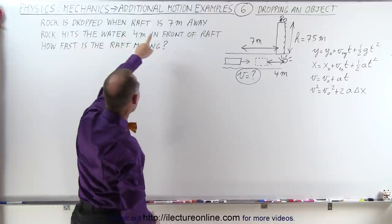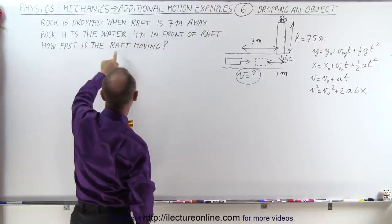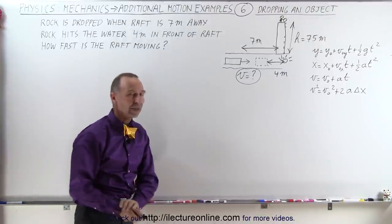So again, the rock is dropped when the raft is 7 meters away. The rock hits the water 4 meters in front of the raft. Let's find the velocity of that raft.